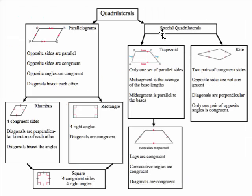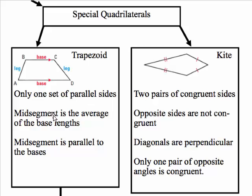Now we're going to take a look at our special quadrilaterals: trapezoids, kites, and isosceles trapezoids. Trapezoids have only one set of parallel sides, called bases. Trapezoids also have a mid-segment, which is halfway along each of the non-parallel sides (the legs). The mid-segment is equal to the average of the base lengths — for example, if the bases are 6 and 8, you add them to get 14, divide by 2, and get 7. The mid-segment is also parallel to the two bases.